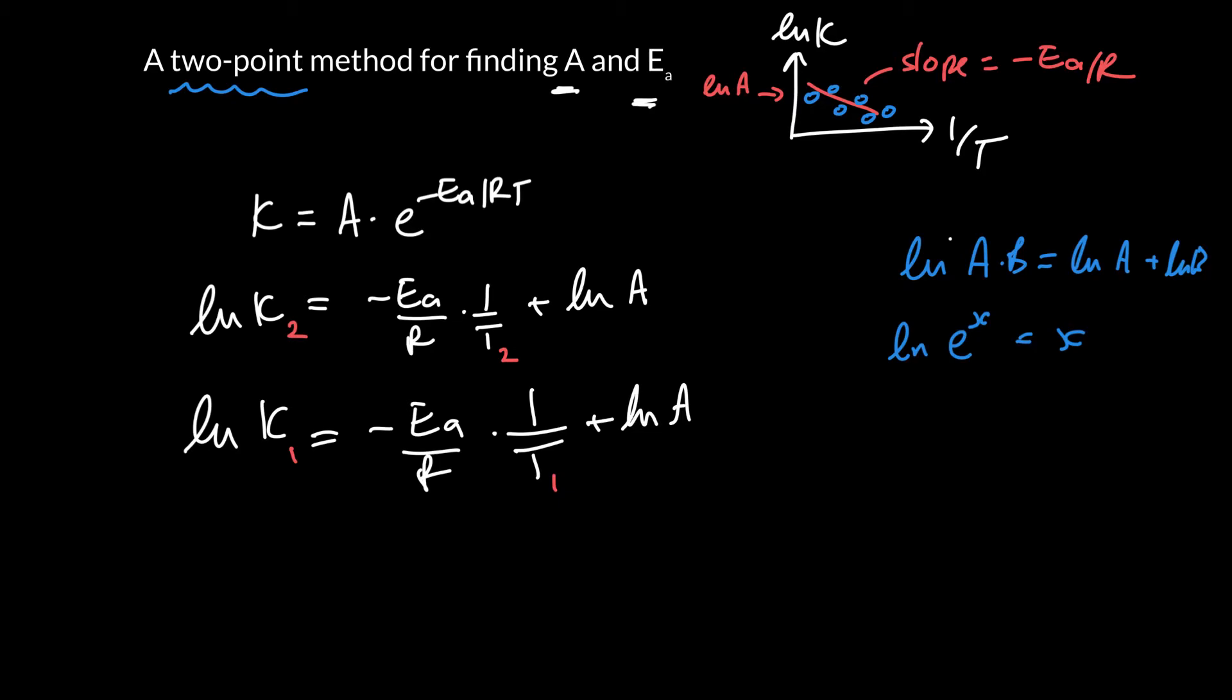So how do I solve for Ea and the natural log of A? So there's a couple of different ways to do it. So the simplest way is just to take these two equations and subtract one from the other. And so now the left-hand side becomes the log of k2 minus the log of k1. And the right-hand side becomes minus Ea over r. And actually, I'm just going to factor out here. 1 over T2 minus 1 over T1.